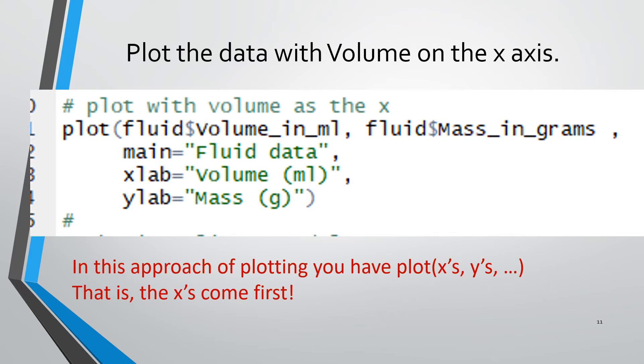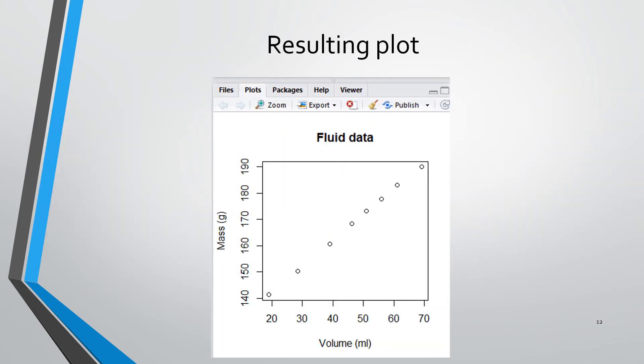We learned in a previous presentation how to plot and fit the data, but we'll do a quick reminder here. So we're using the plot method. We have five arguments here. We're plotting data that is in a fluid data frame. And then it had two fields volume in milliliters and mass in grams. We're separating them by a comma. When we take that approach to plotting, then we want x first and y second. So when we plot this, the volume is going to be on the x-axis and the mass is going to be on the y-axis. The argument that starts off main equals is titling the graph. The argument starting off xlab equals is giving us an x-axis label. And the argument starting off ylab equals is giving us a y-axis label. And here are the results over in the plot region.